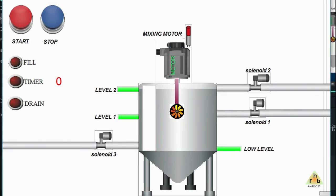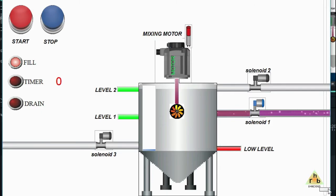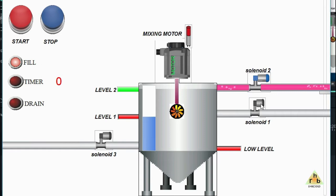Now we can see the HMI screen. This is the start button. As soon as the start button is pressed, solenoid valve 1 is turned on and liquid starts flowing into the tank. As the liquid enters the tank, the low-level sensor detects the rising level. Once the liquid level reaches Level 1 and the Level 1 sensor detects it, solenoid valve 1 is turned off and solenoid valve 2 is turned on to fill the second liquid into the tank.